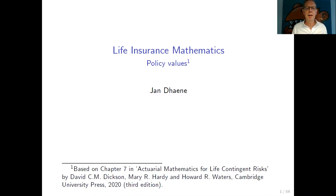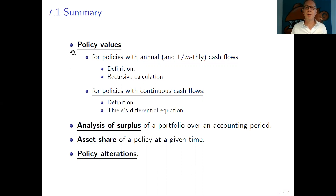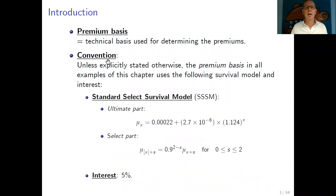Welcome to this first video on policy values. The presentation is based on chapter 7 in the book Actuarial Mathematics for Life-Contingent Risks. As a summary, we will consider policy values. We will define policy values for policies with annual and 1/m cash flows, derive the recursive way of calculating these, define policy values for policies with continuous cash flows, and derive Thiele's differential equation. We will also consider portfolio surplus, asset share, and policy alterations.